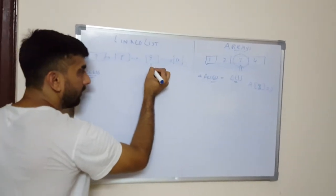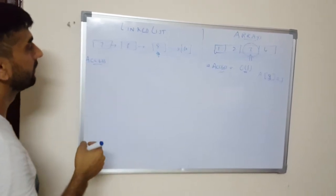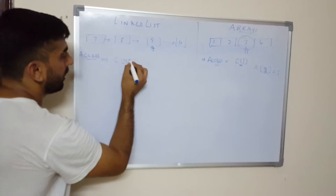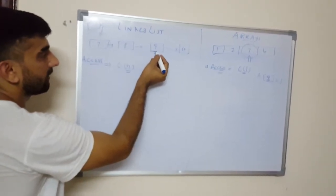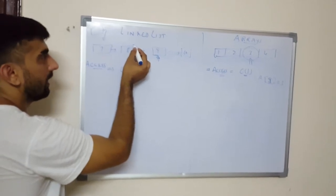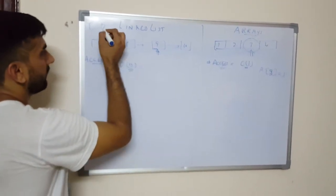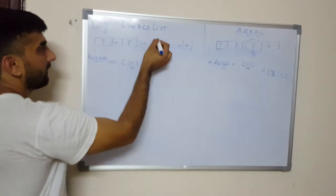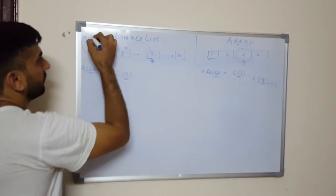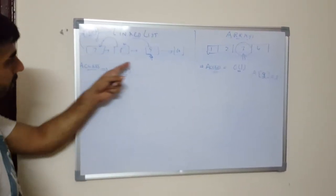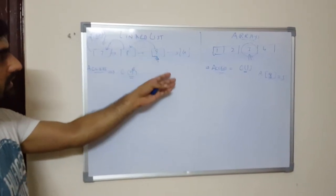If we have to access a node in a linked list, what will be the time complexity? To access a particular node you need to have the address of that node, and the address lies inside the previous node. So you have to traverse from the head node all the way to that node. For example, if the head node is here, you have to traverse until you reach the target node. So it is going to be O(N), where N is the number of elements in that linked list.